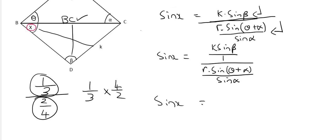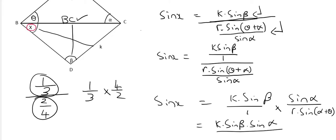So doing that over here, we're going to end up with sin x equals to k times the sin of beta over one times by the flipped over form of the bottom fraction. So that's going to be sin alpha over r times the sin of theta or alpha plus theta. It doesn't matter. I've switched the order there, but that's okay. When you're plussing, the order doesn't matter. And there we are pretty much at the answer. We can just multiply the top part together now. So that's just going to give us that over there. And then at the bottom, we're simply left with r times by the sin of alpha plus theta.